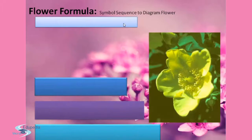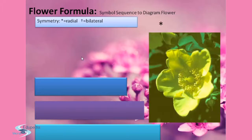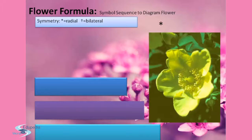Now let's see the symbol sequence to diagram flowers. There are two kinds of symmetry: radial and bilateral. Radial symmetry, also known as actinomorphic, is when a flower can be divided into two equal halves in any radial plane — seen in mustard, datura, and chili. Bilateral symmetry, or zygomorphic, is when it can be divided into two similar halves only in one particular plane — for example pea, gulmohar, bean, and cassia.